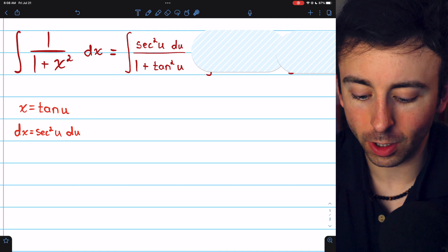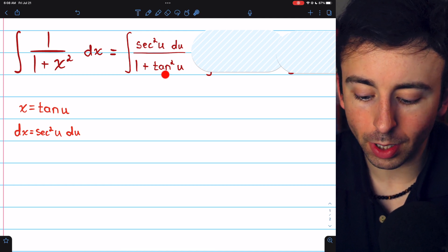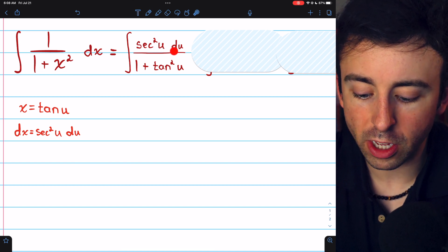And we can rewrite the integral like this: 1 plus x squared becomes 1 plus tangent squared, and the dx is replaced with secant squared u du.